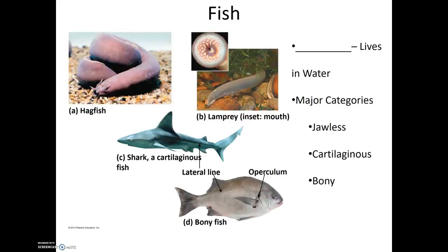The first of these we'll talk about are the fish. Fish are aquatic, meaning they live the entirety of their lives in water. There may be a few species of fish which can survive outside of water for limited periods of time, but as a group, they almost entirely live within the water. There are three major categories of fish: the jawless fish, the cartilaginous fish, and the bony fish.